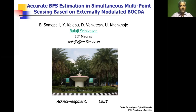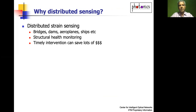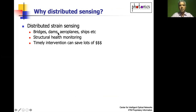Let's start with a brief motivation for why we need these Brillouin optical distributed sensors. When we talk about distributed sensing, specifically distributed strain sensing, it is very useful for a variety of applications — specifically structural health monitoring of bridges, dams, airplanes, ships, etc.